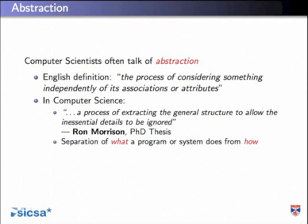Let's talk a little about what we mean by languages and abstraction. In computer science we're always talking about abstraction. As far as English speakers are concerned, abstraction is — from the dictionary — the process of considering something independently of its associations or attributes. In computer science, the best definition I found was from Ron Morrison's PhD thesis. Ron Morrison was the former head of department at St. Andrews University. The definition says: a process of extracting the general structure to allow the inessential details to be ignored.